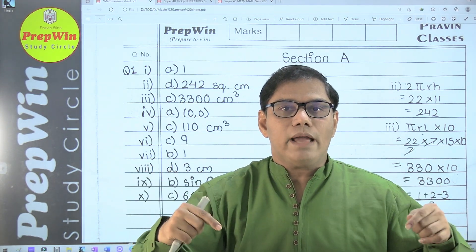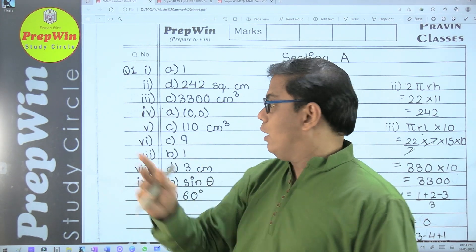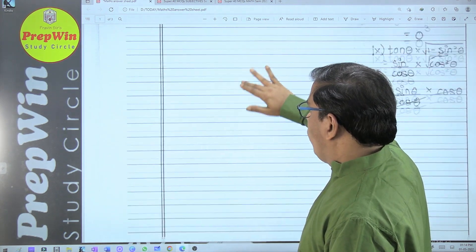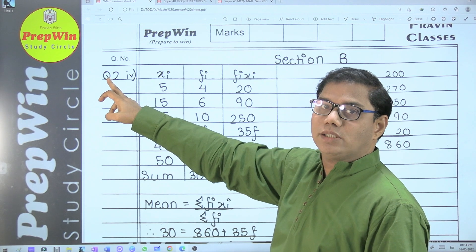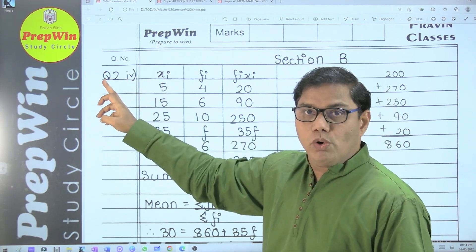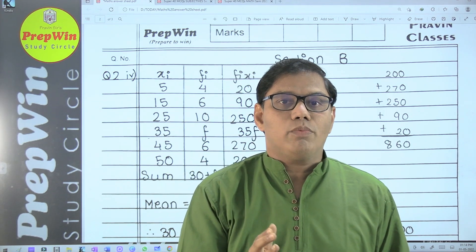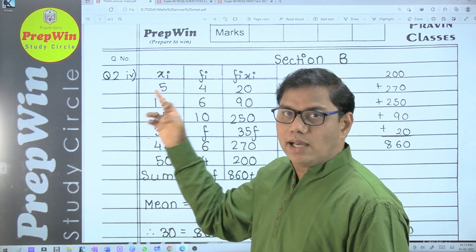You can type your doubts in the comment box and I will definitely solve them. This was about the question number. Now suppose a new question has to be started on a new page. You can see here question number two - student has started on a new page. Question number two has again four sub-questions: one, two, three, four.